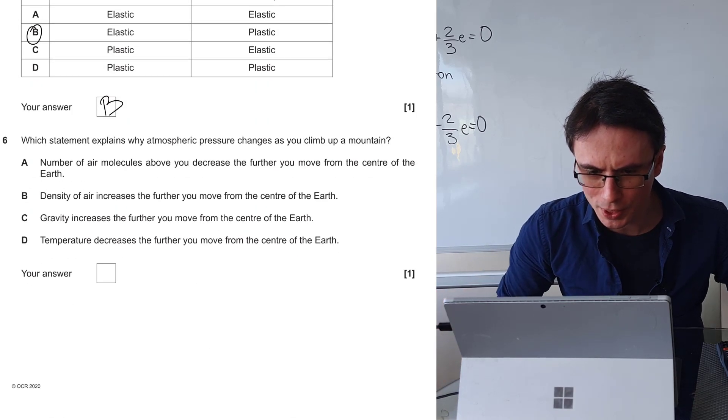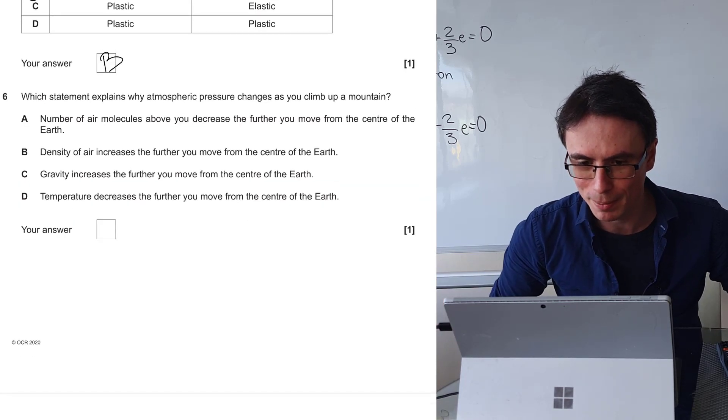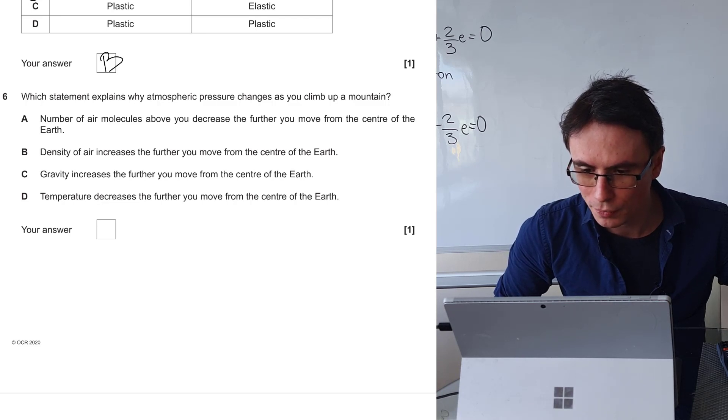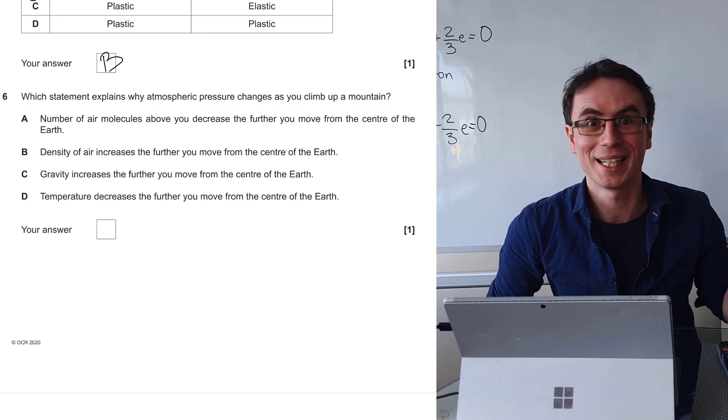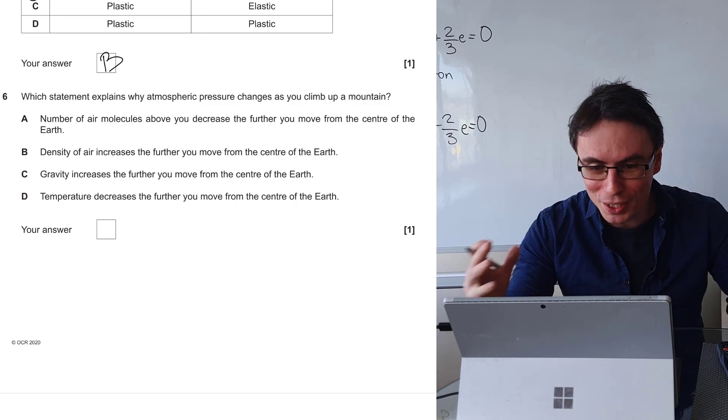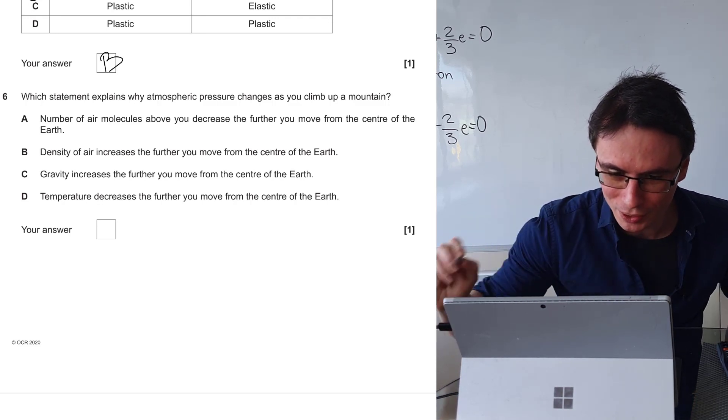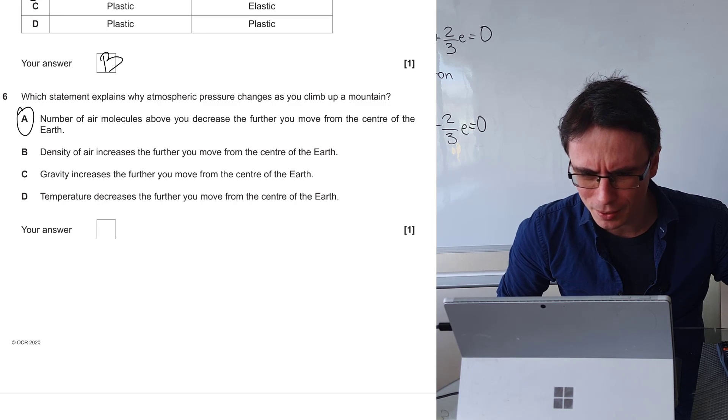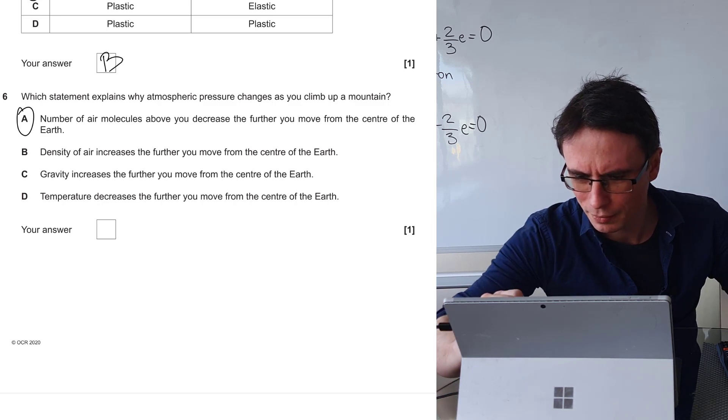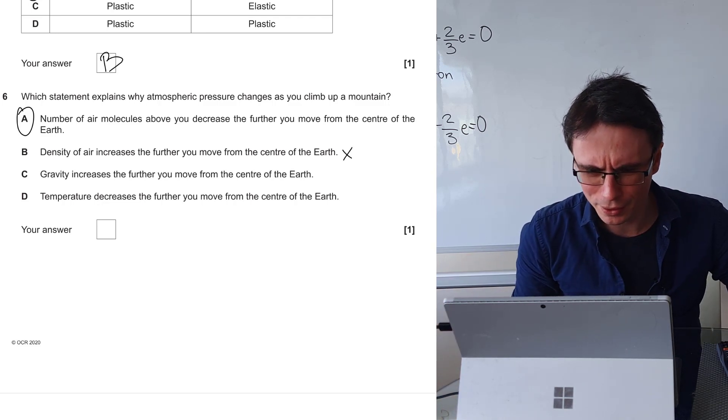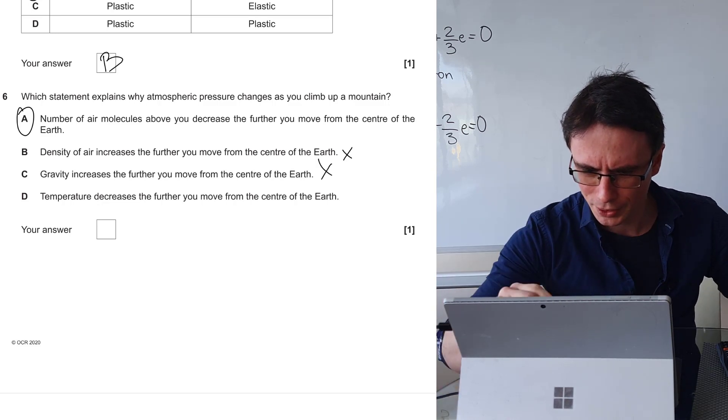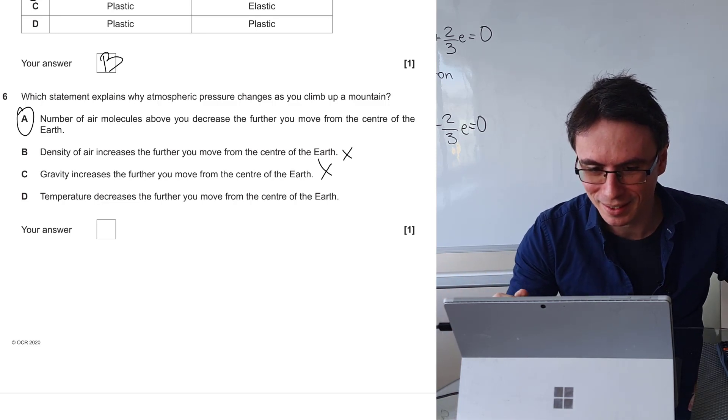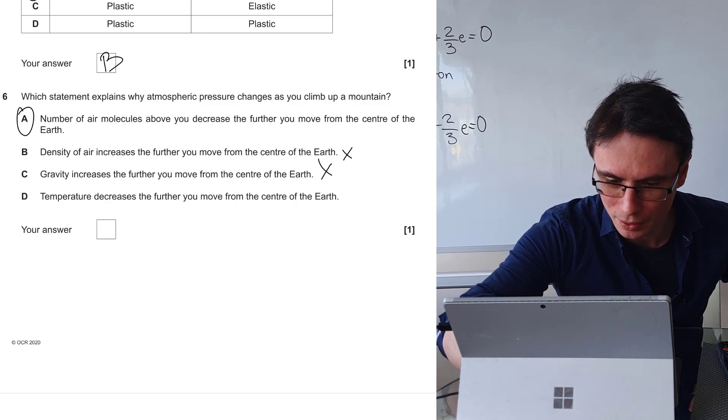Question 6. Which statement explains why atmospheric pressure changes as you climb up a mountain? The number of molecules above you decrease the further you move from the center of the Earth. Yeah, that's absolutely right. Literally, the higher you go, the less air there is. That's why it's harder to breathe. That's why pressure changes. So I don't even need to read the rest of the answers. I know that A is correct. Actually, just to be sure we've not made a mistake, let's have a quick read. The correct answer has got to be A.